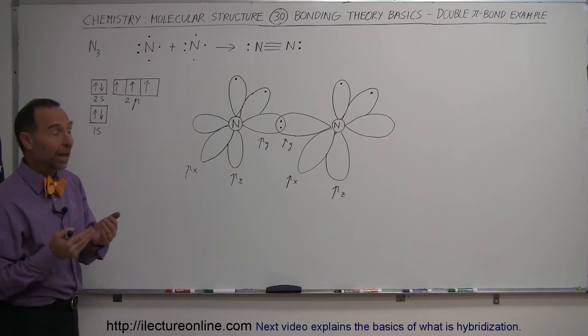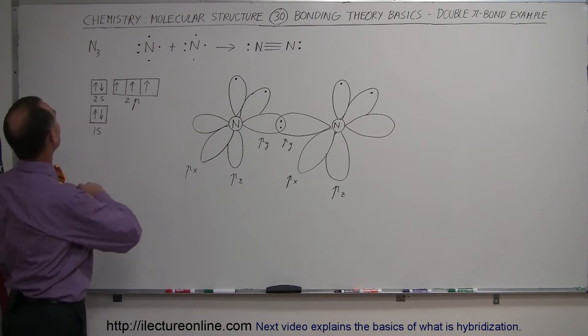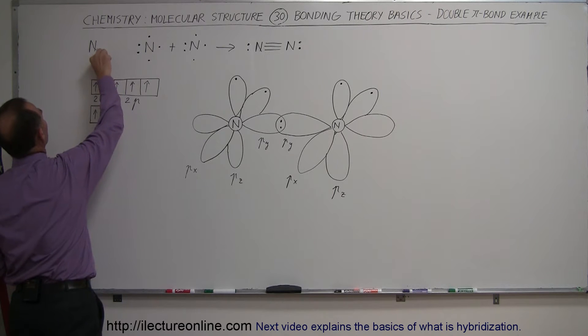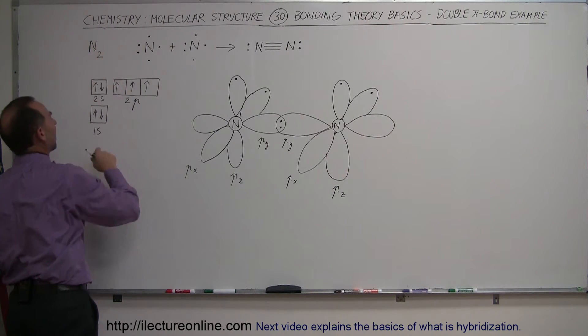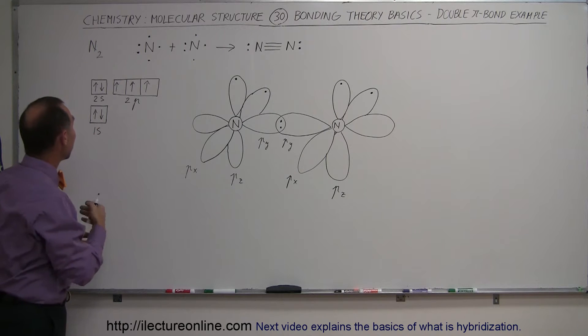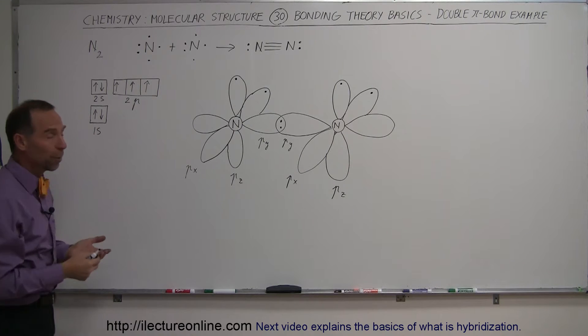That double pi bond will exist when you have a molecule like nitrogen - oh, not N3, N2. I thought about the 3 when I was thinking about a triple bond, but no, it's actually the N2 molecule, a nitrogen gas molecule.